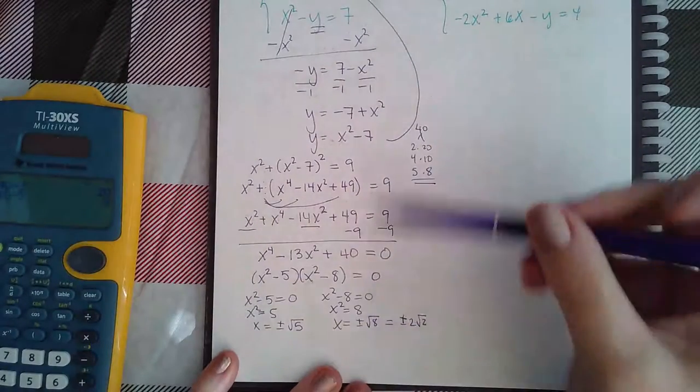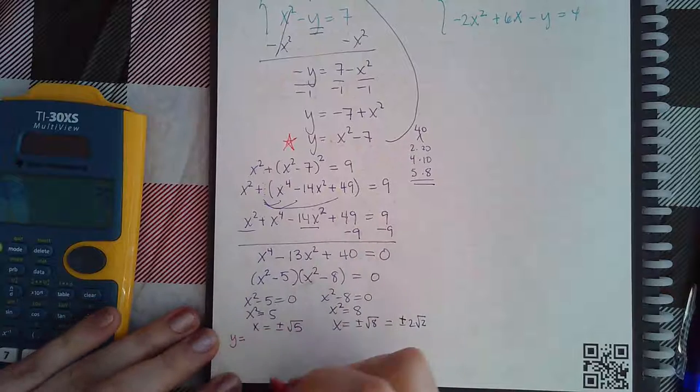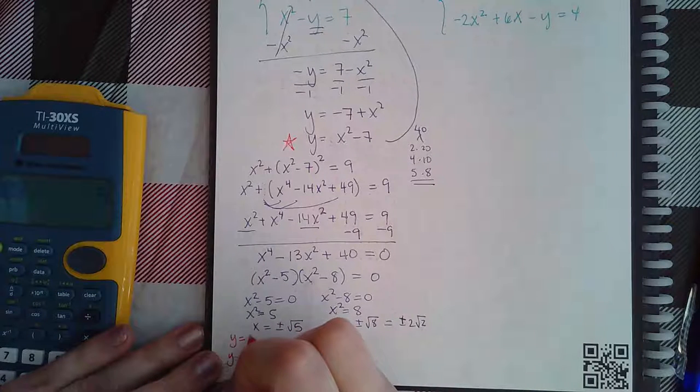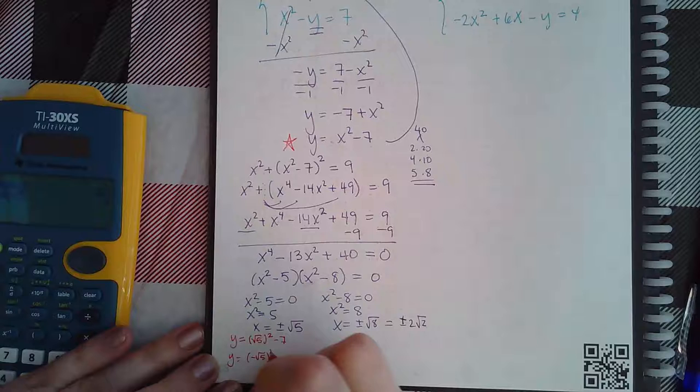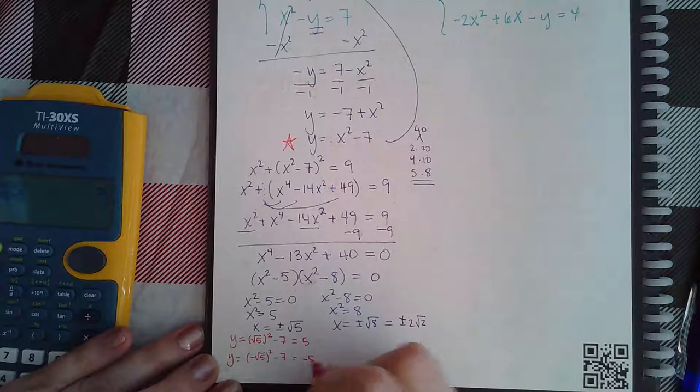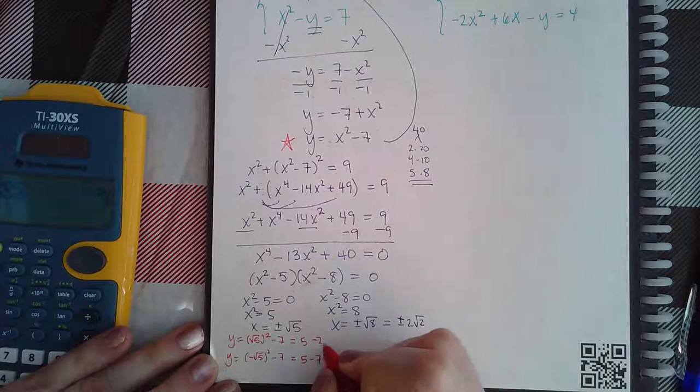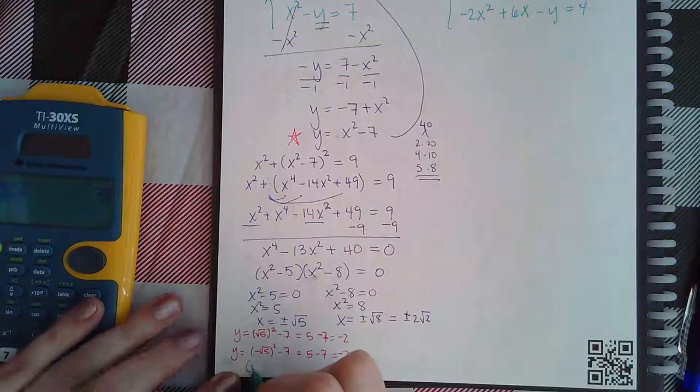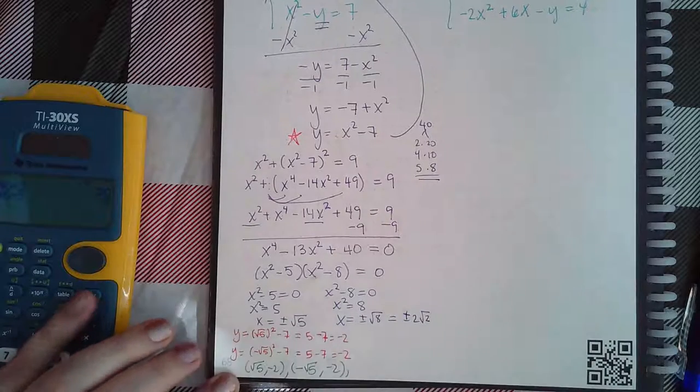Now to figure out what y is I'm going to plug these values into this expression that tells me what y is. For the first one you get 5, positive 5, negative times a negative is positive, so I get negative 2 for both of them. My two solutions here are positive square root of 5 and negative 2, and negative square root of 5 and negative 2.